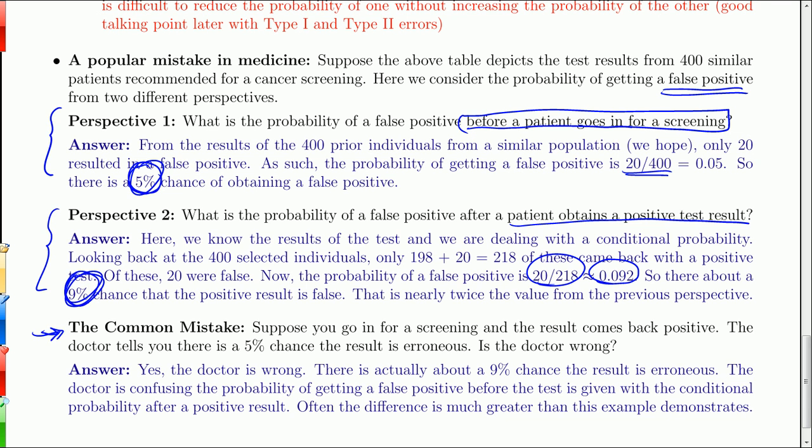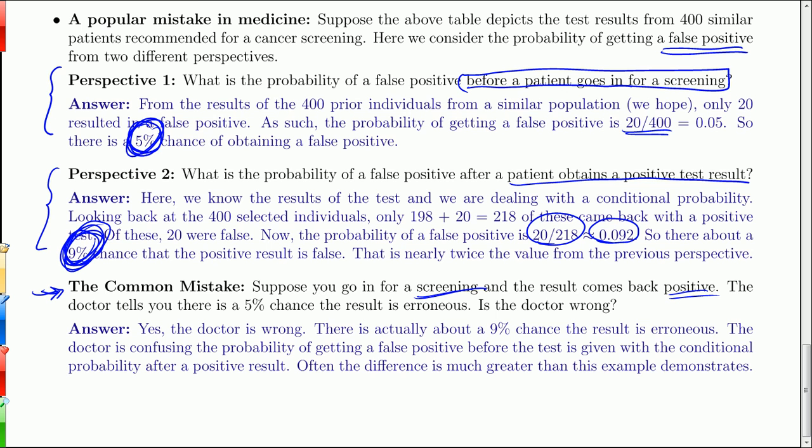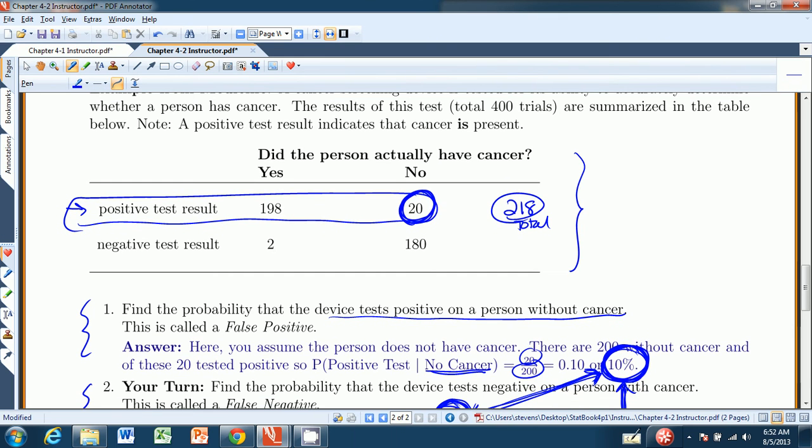The common mistake made in medicine is that suppose you go in for a screening and the result comes back positive. The doctor will often quote you this 5% chance of it being a false positive, when in fact there's a much greater probability. Once you come back with that positive, the probability of it being false goes up. Here it went from 5% and almost doubled, but it can get a lot worse than that depending on the scarcity of the disease. That's a significant difference in a regular probability and a conditional probability. I believe that wraps up conditional probabilities. We'll see you in the next chapter, which is chapter 4.3.